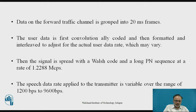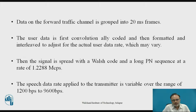Data on the forward traffic channel is grouped into 20ms frames. The user data is first convolutionally coded, formatted, and interleaved to adjust for actual user data rates, which may vary. This is required for conversion of frequency associated with the CDMA channel. The signal is spread with the Walsh code and a long PN sequence at a chip rate specified as 1.2288 MCPS. The speech data rate applied to the transmitter is variable over the range mentioned in the block diagram.